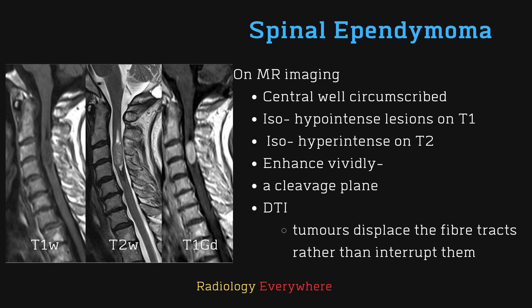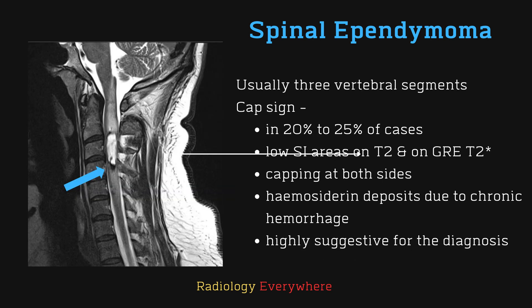These are usually well defined, which allows total removal of the tumor in most cases, as they are mainly compressed rather than infiltrating. We can see a cleavage plane. Occasionally, DTI may show fiber track displacement rather than interruption. The mean size of ependymoma is usually within three vertebral segments, whereas astrocytoma is typically very extensive.